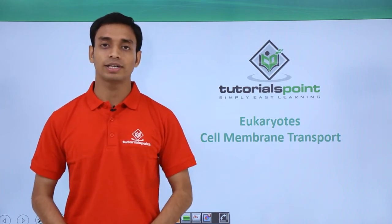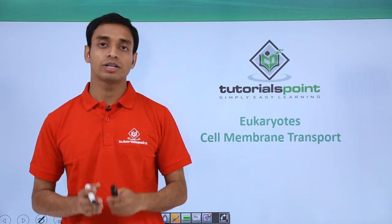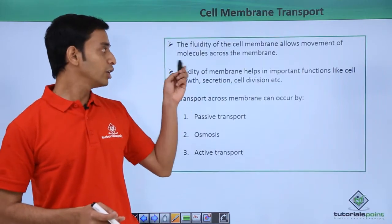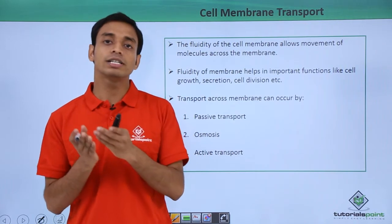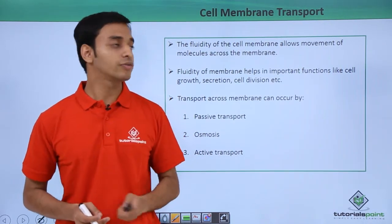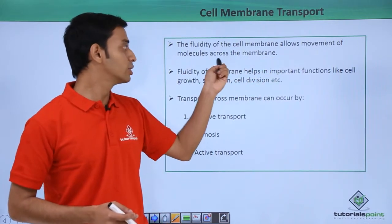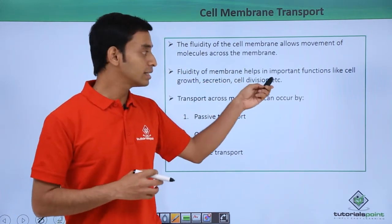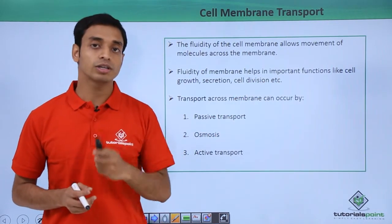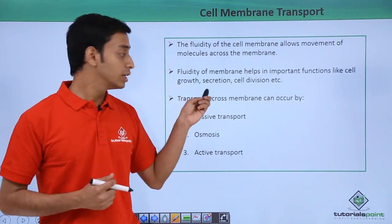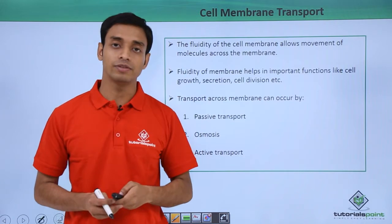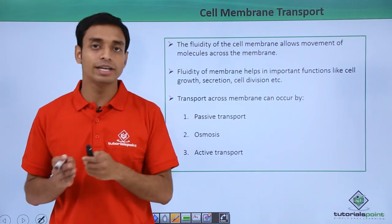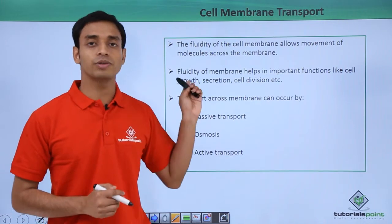Welcome to Tutorials Point. In this video we are going to talk about the transportation process happening across eukaryotic cellular membranes. The eukaryotic cellular membrane — the lipid bilayer — has a quasi-fluid nature. Because of this fluidity, it allows the movement of molecules in and out across the membrane, enabling important cellular functions such as cellular growth, secretions from the cells, cell division, and many others.